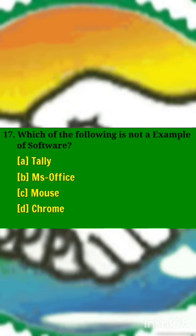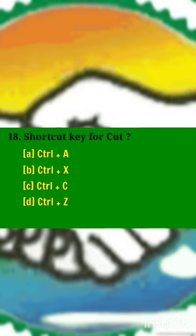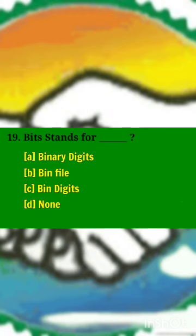Which of the following is not an example of software? Answer C: mouse. Shortcut key for cut? Answer B: Control X. Bits stands for? Answer A: binary digits.